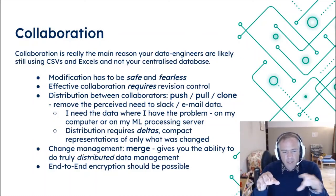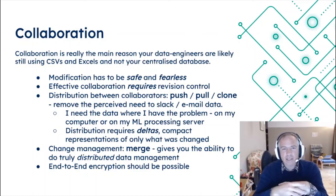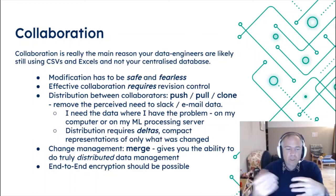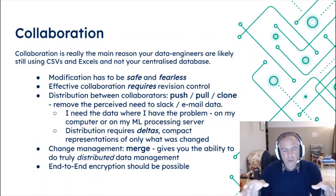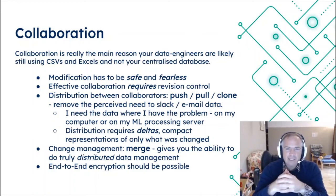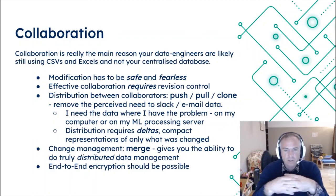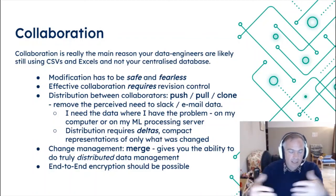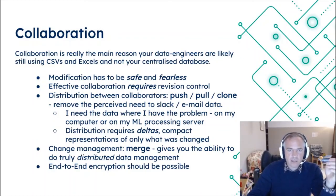We also want to be able to do this safely so we can collaborate and share information in such a way that we're not worried it's going to be disclosed. For data, this is even more important than for code. A lot of code is now open source, but people's expectation is that source code has a slightly lower value in and of itself than does data. There are all kinds of privacy concerns and really a lot of the gold is in the data. You want to be able to encrypt that in an effective manner — these deltas should be encryptable and it should be possible to send them in an end-to-end encrypted manner.